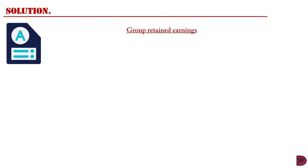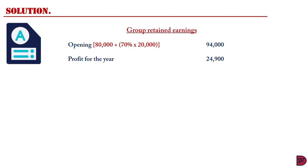Moving to the movement in group retained earnings: the opening of $94,000 came from adding the $80,000 of the parent plus 70% of the subsidiary's opening retained earnings of $20,000. The profit for the year was $24,900 from the solution just completed. The carried-forward group retained earnings will therefore be $118,900.